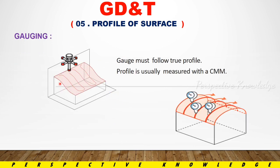Next, we are going to gauge the profile of the surface. We will create the profile of the surface and compare the profile as well. The gauge must follow the true profile. The profile is usually measured with a CMM. For an irregular profile, we compare the measured profile against the CAD profile.